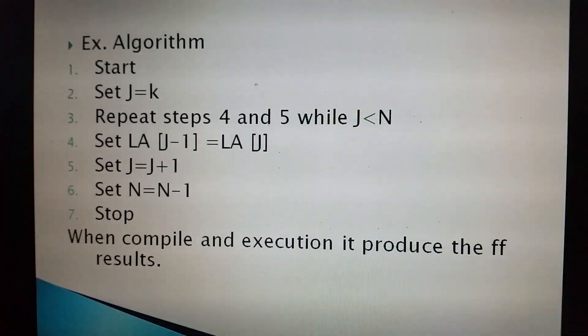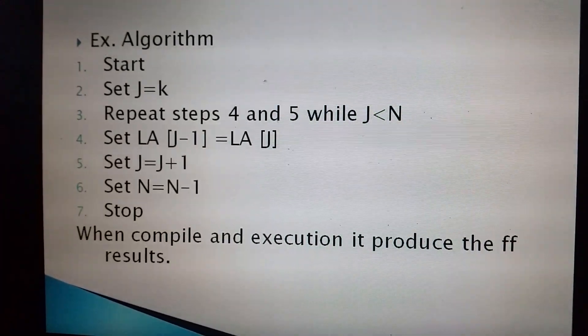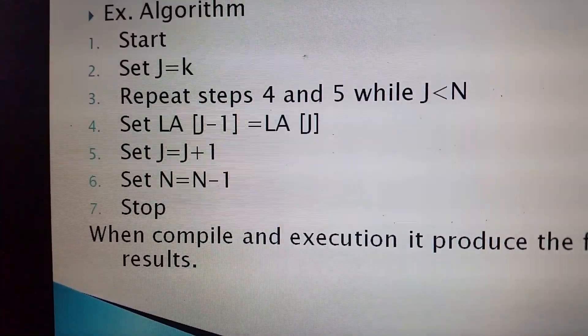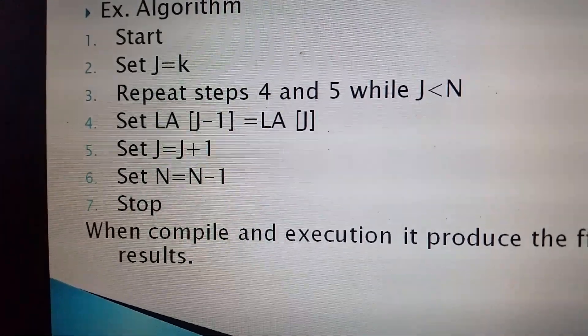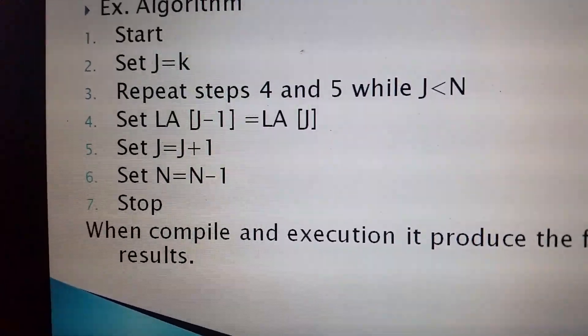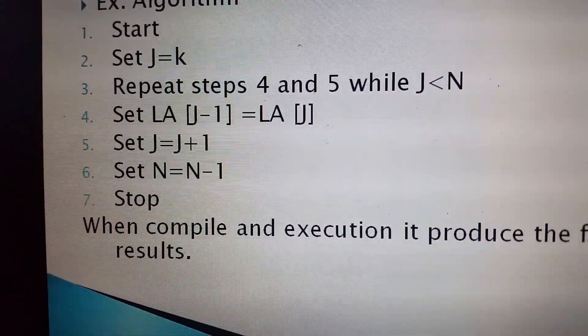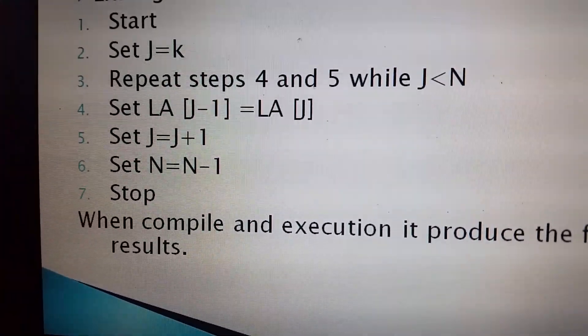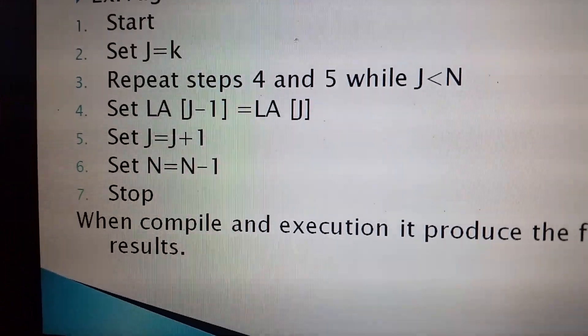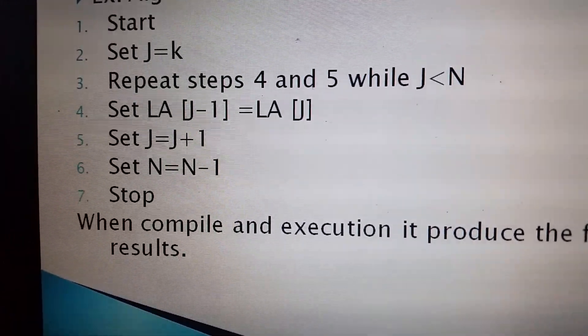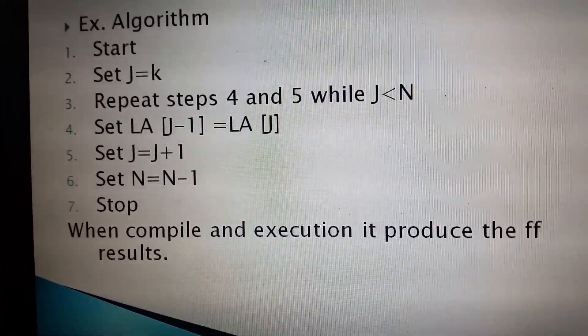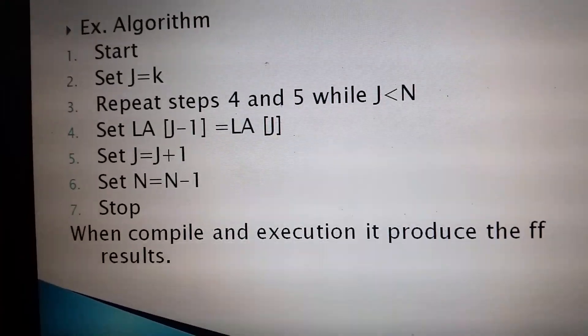For example of algorithm: number one, start. Set J equals to K. Repeat step four and five while J is greater than N. Number four: set LA[J-1] equals to LA[J]. Then five: set J equals to J plus one. Set N equals to N minus one, and number seven, stop. When combined in execution, it produces the following results.